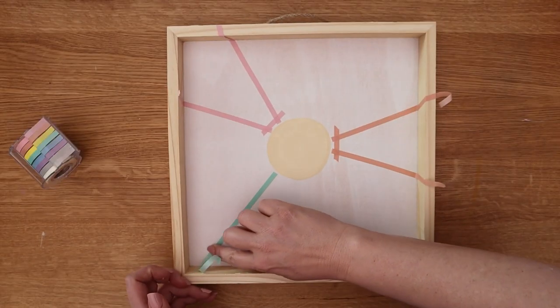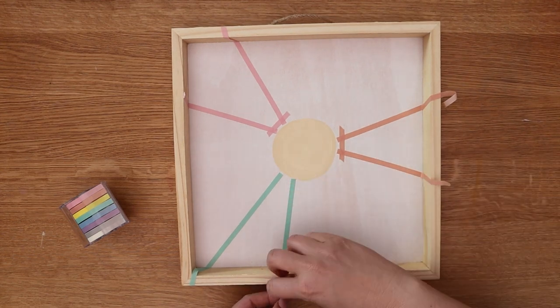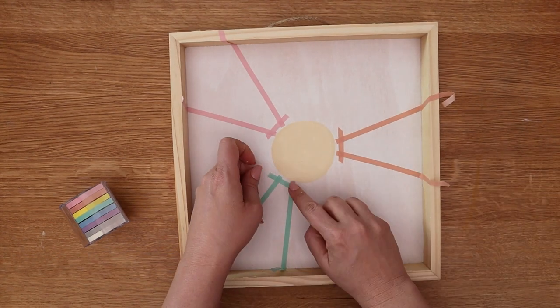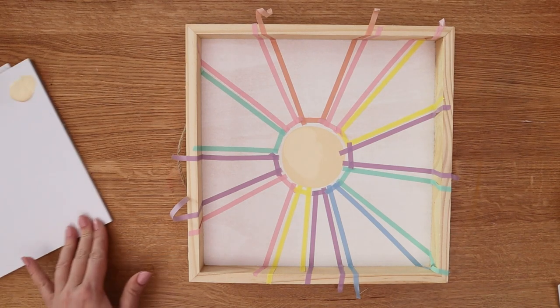And as you apply the washi tape be sure to use your finger to smooth it down firmly so you get a nice tight seal. And when we have our 12 sections all taped off we are ready to paint.